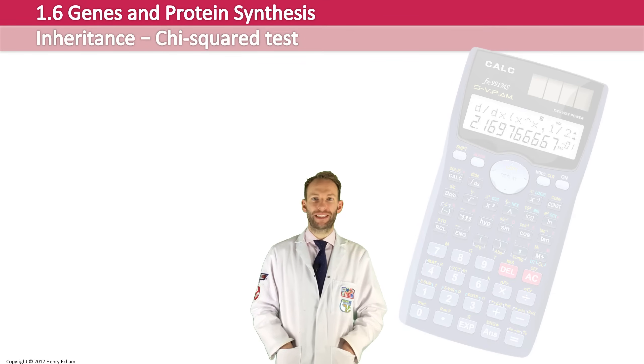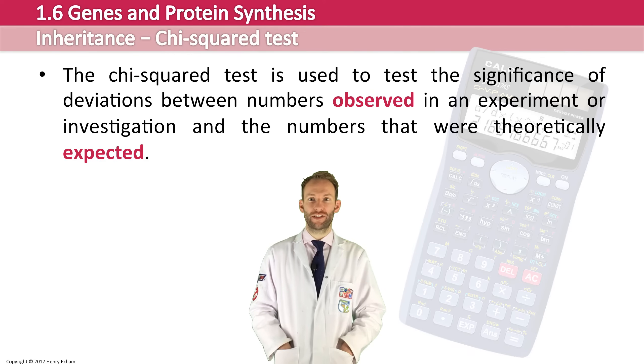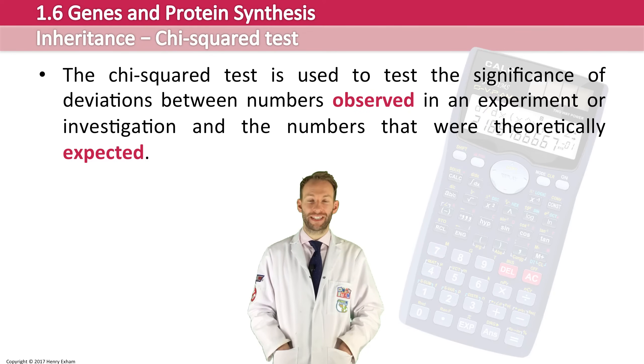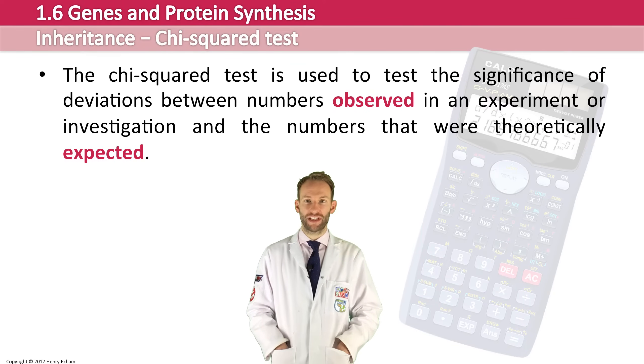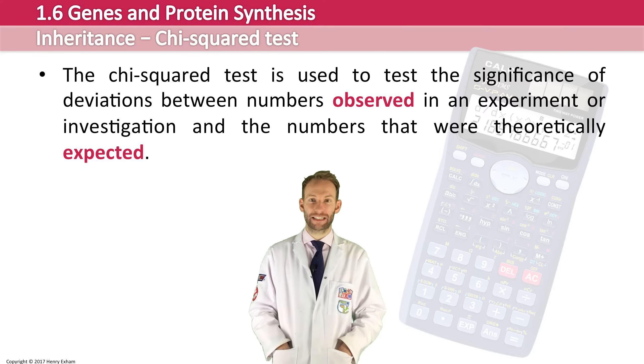Okay, so this video involves a little bit of maths. We're going to look at something called the chi-squared test. Now, this chi-squared test is used to test the significance of deviations between numbers which are observed in an experiment or an investigation and the numbers that were theoretically expected.